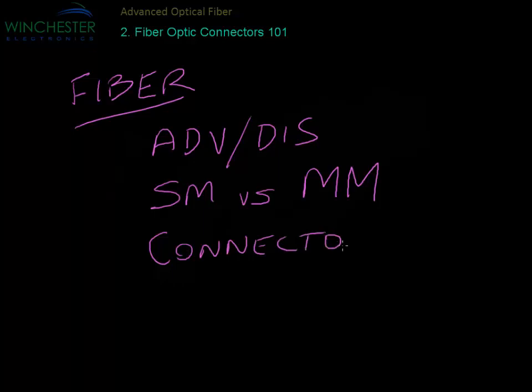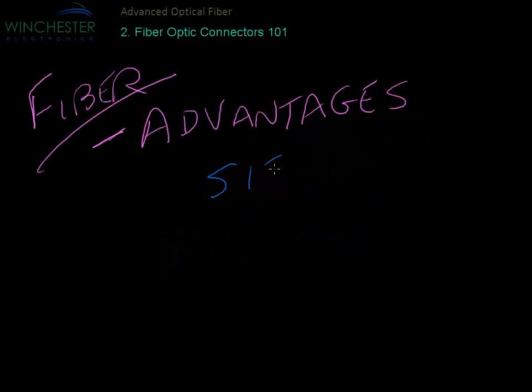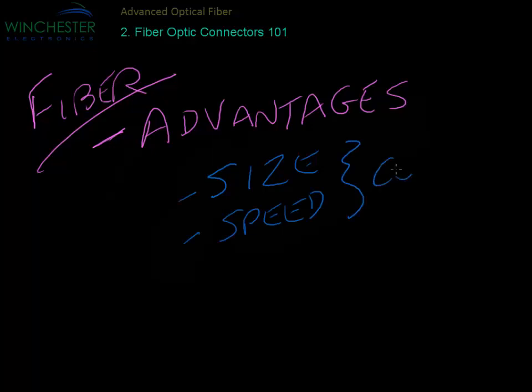One of the main advantages is size. Fiber optics are a lot smaller than copper for the same amount of communication capacity. The other advantage is increased bandwidth, or speed of the signal that can go down the actual fiber optic cable. This results in a lower cost for any high-speed network. It should be noted, though, if you don't need a small size or a high speed, then often a copper connection will do just fine.